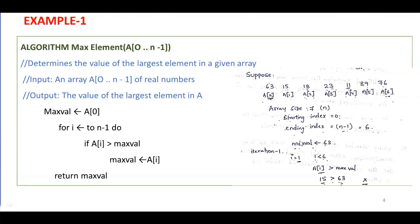Here is an example. Suppose we take a list of 7 elements: 63, 15, 18, 23, 11, 89, and 76. The array size is 7, starting index is 0 and ending index is 6. From our assumption, we take the first element as the max element, so max value is 63. The algorithm starts comparison from the first element — 63 is compared with 15, and our assumption holds, so we do not swap.